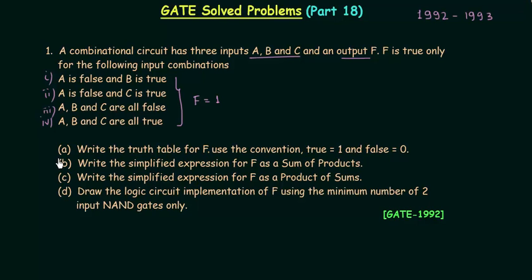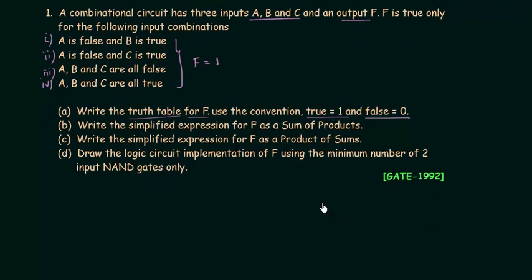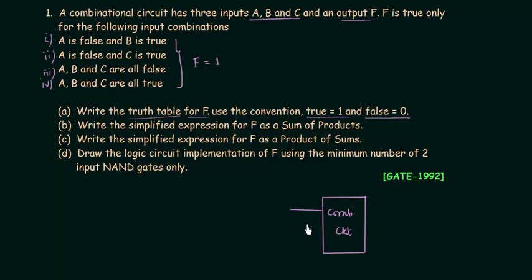The A part of the problem says write the truth table for F, using the convention true is 1 and false is 0. We have three inputs A, B and C going into a combinational circuit. We don't know what is inside this box and I will try to find out by using the four conditions given. The output is F.